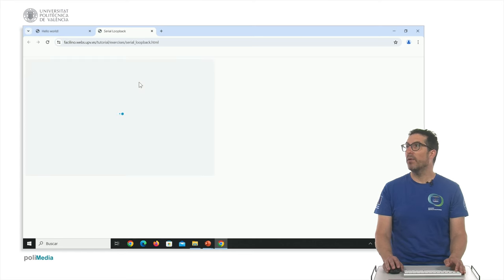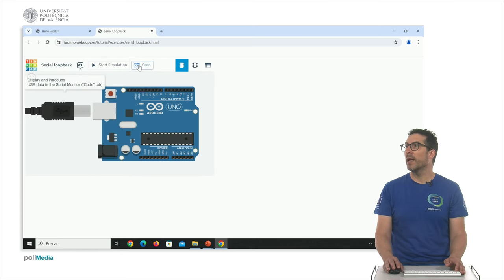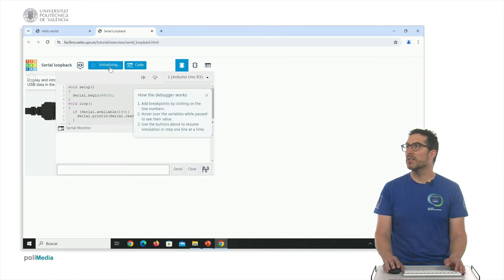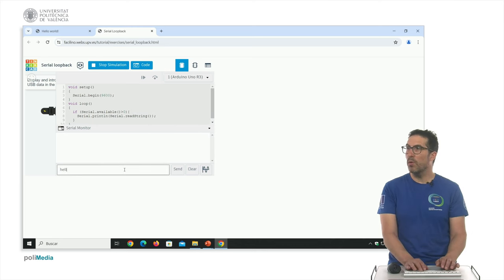This example shows how this code works. It's exactly the same code as we saw before. If we press start simulation and we print here Hello, and we send it to the electronics, the electronics will respond by printing the same sentence here in the monitor. And if we type Hello again, we have a new line here as well.